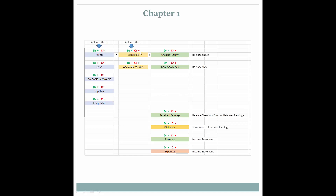Liabilities and owner's equity are going to increase with the credit, whereas assets are going to increase with the debit. These assets are all going to increase with the debit, and if we want to decrease them, we're going to decrease them with the credit. Assets are always found on the balance sheet. We have one very basic liability account — it is increased with the credit, and all liabilities are found on the balance sheet.